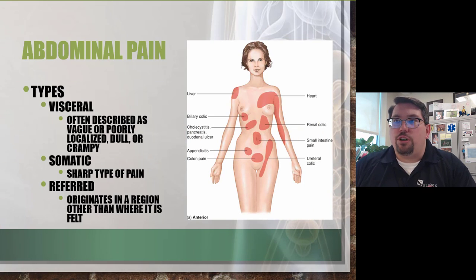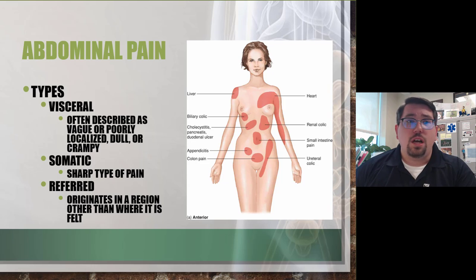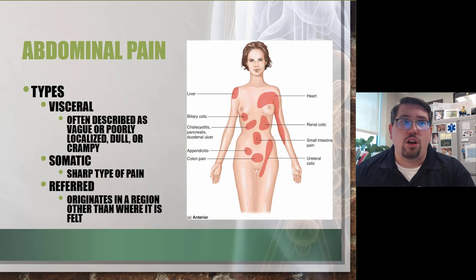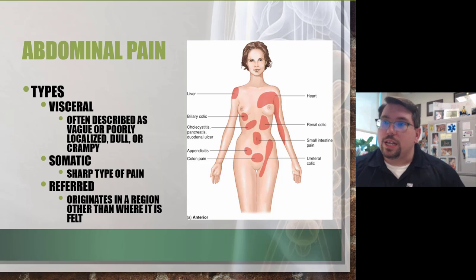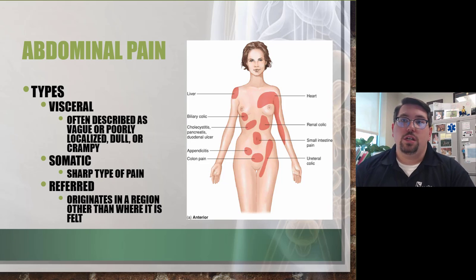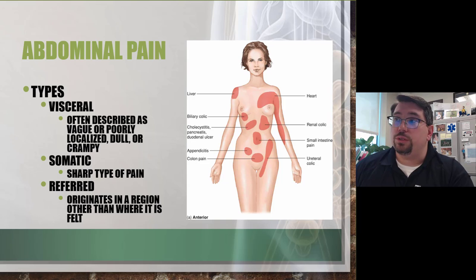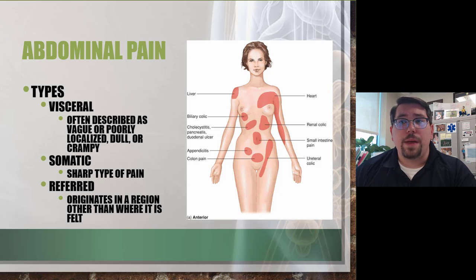There are three types of gastrointestinal pain. Visceral pain is often described as vague or poorly localized, dull or cramping. Hollow organ pain is very vague or nondescript, whereas pain from a solid organ is typically more localized. Somatic pain is very specific and sharp in nature. Referred pain is where pain starts in one area and radiates to another — cholecystitis or colicky gas pain that causes shoulder pain are examples.